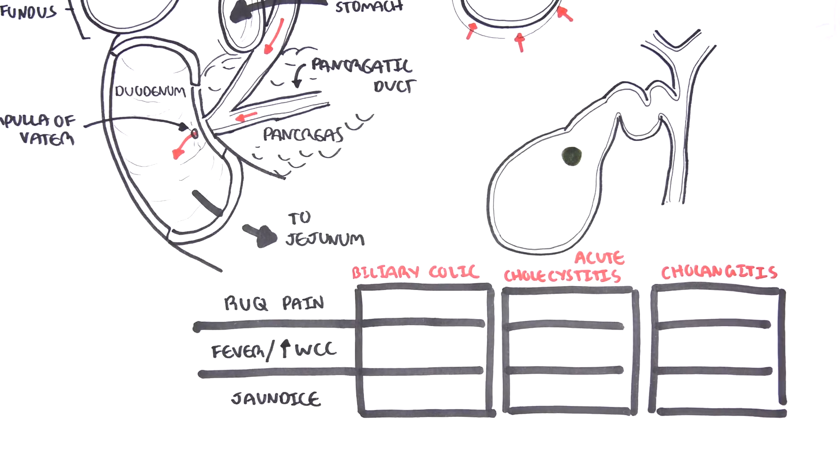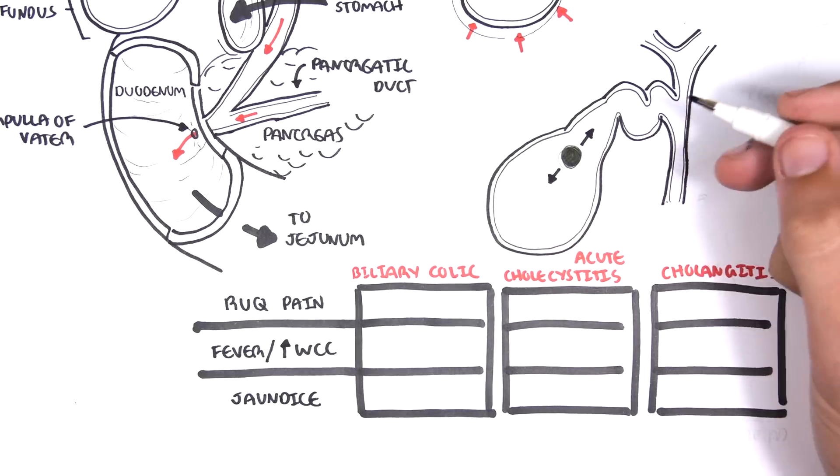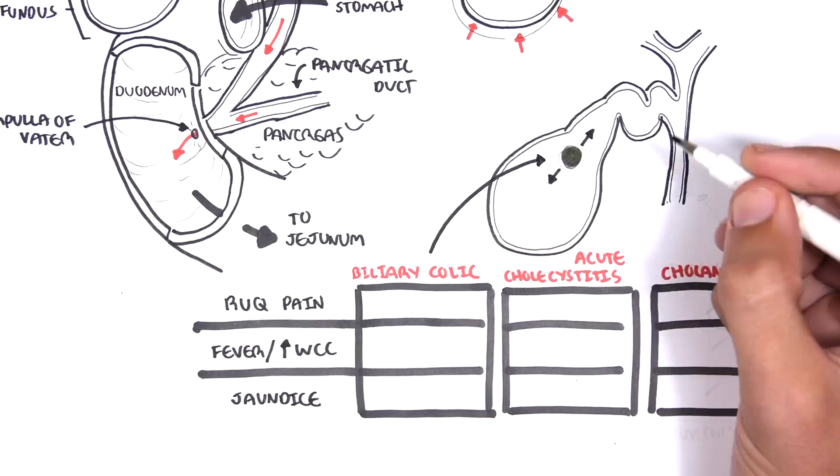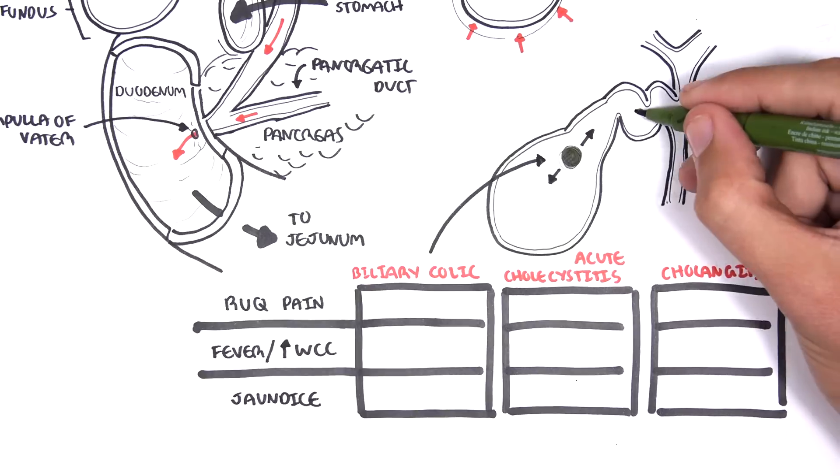So what are actually these conditions? Well, biliary colic is where there is only temporary obstruction of the gallstone at the neck of the gallbladder. So it can go in and out.